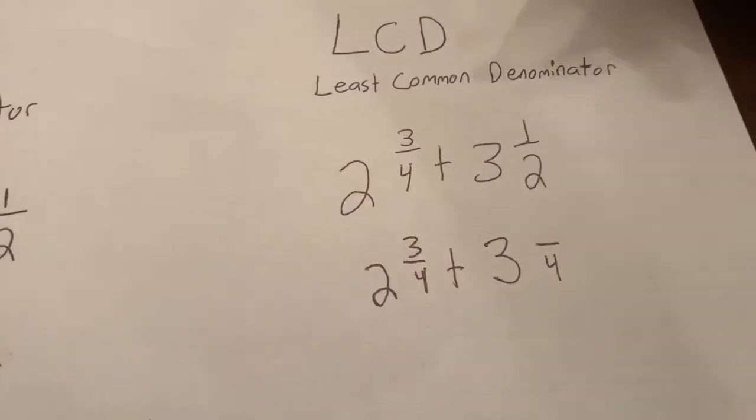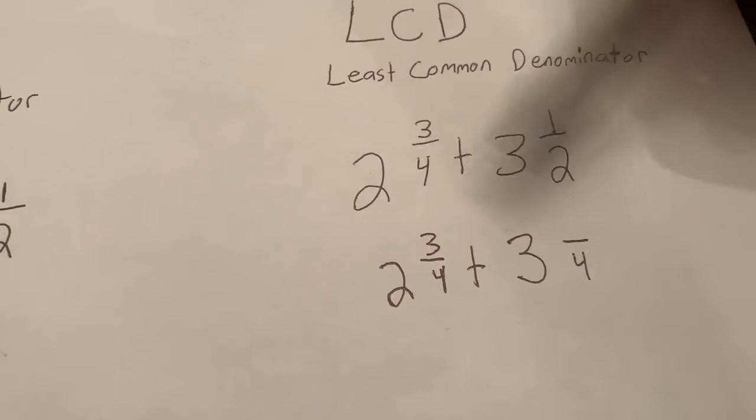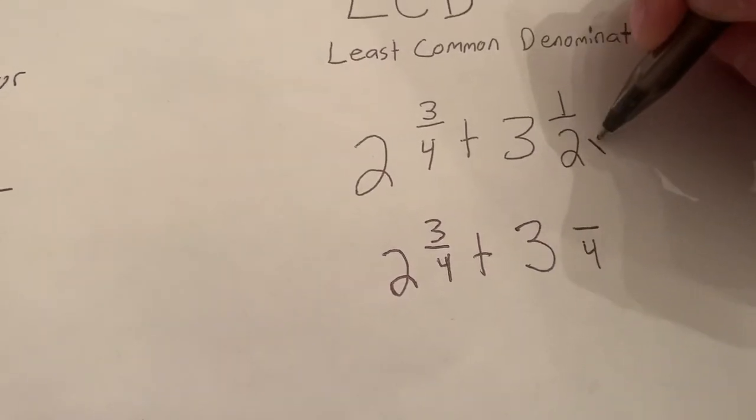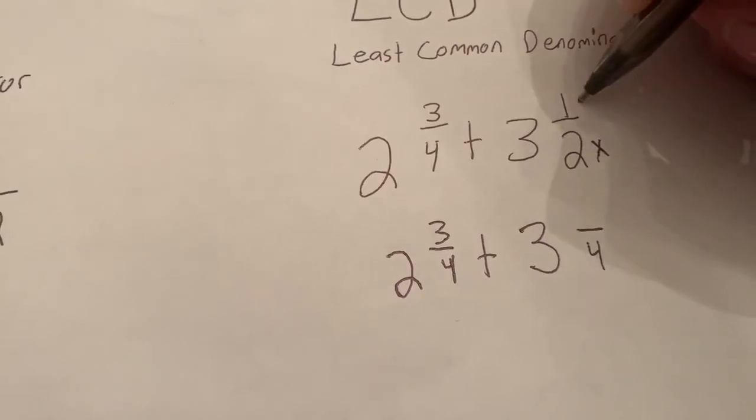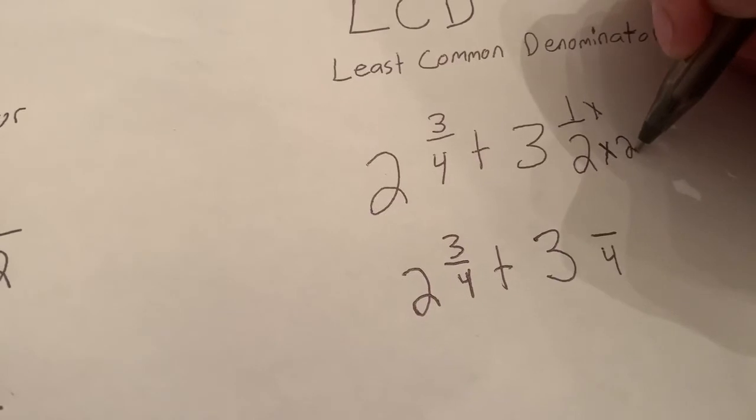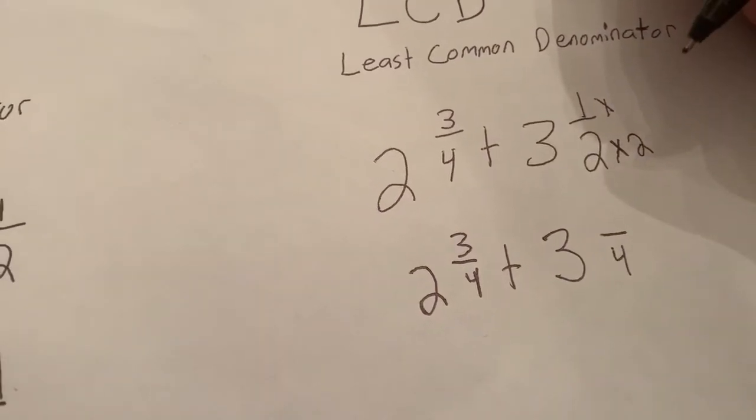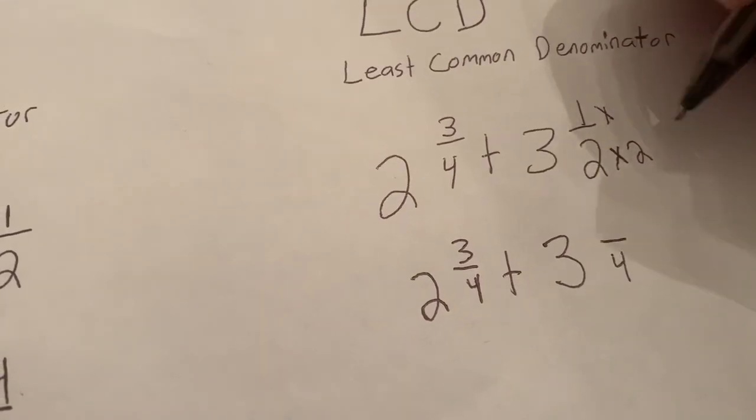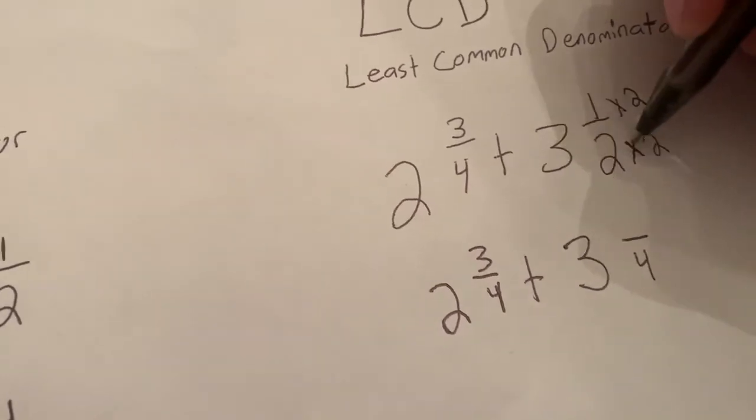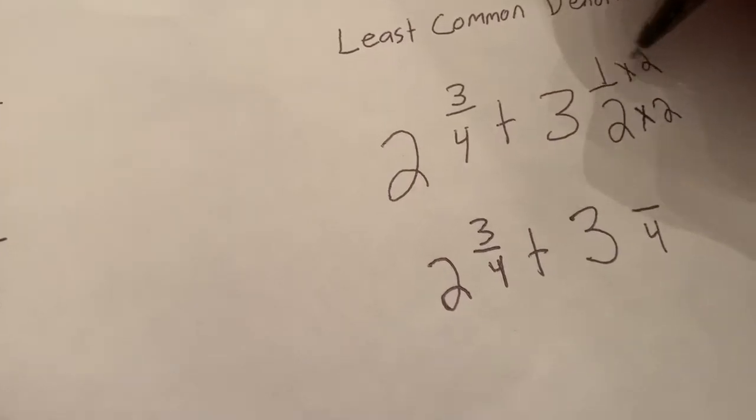Now you do not cross multiply like we've talked about with LCD, but you come up here, make your multiplication symbol, and you go: 2 times what is 4? That's right. What you do to the bottom, you must do to the top. You multiplied me by 2? Are you gonna multiply me by 2? Sure: 1 times 2 is 2.